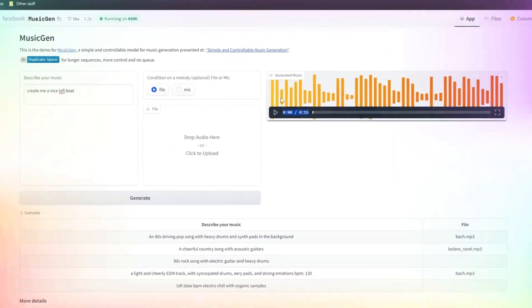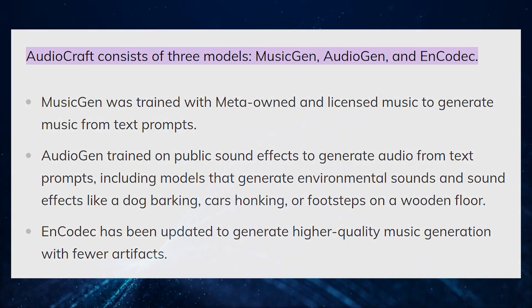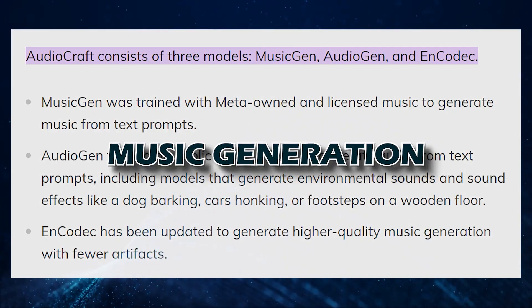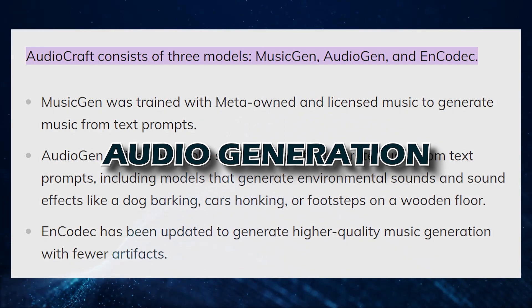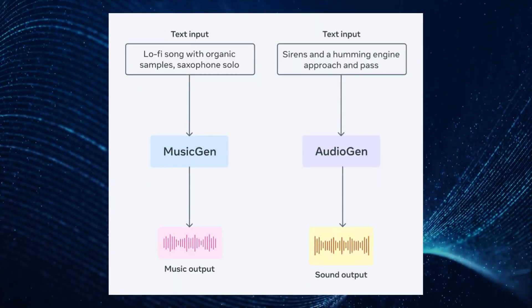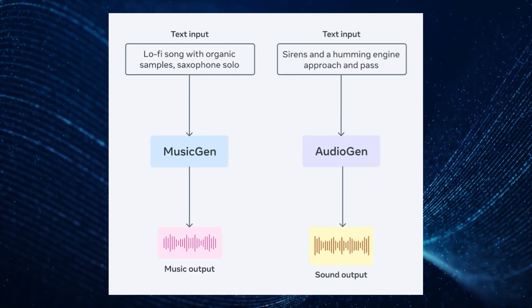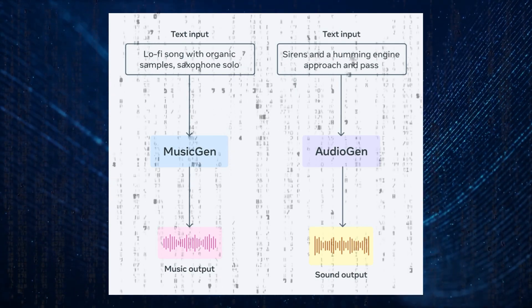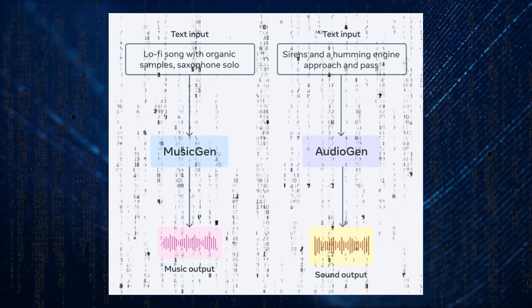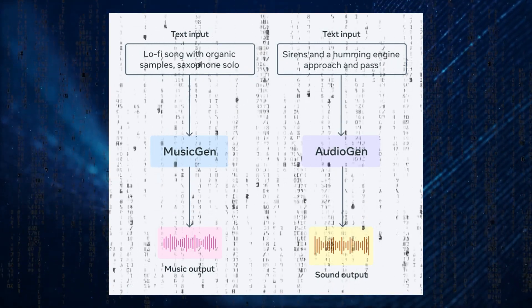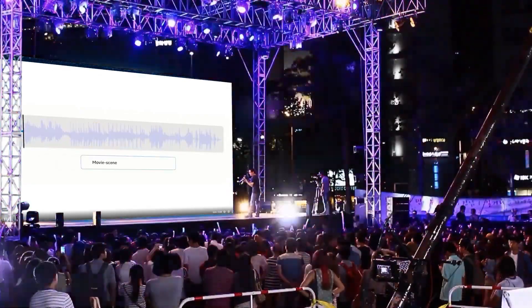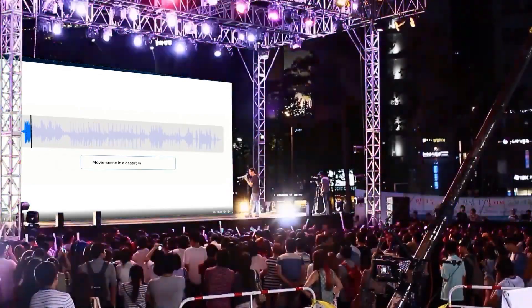AudioCraft is essentially a framework amalgamating three distinct AI models: music generation, audio generation, and codec application. The music generation model fabricates music based on text inputs, whereas the audio generation counterpart produces distinct sounds like barks of dogs, car honks, or footsteps from textual prompts.